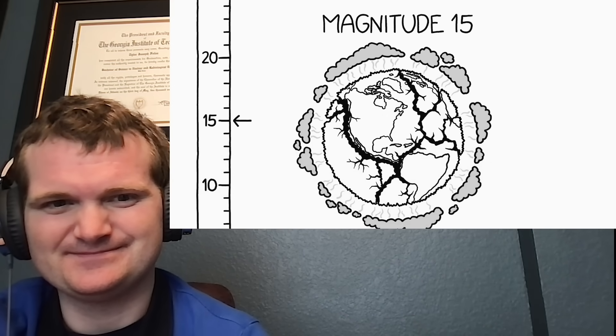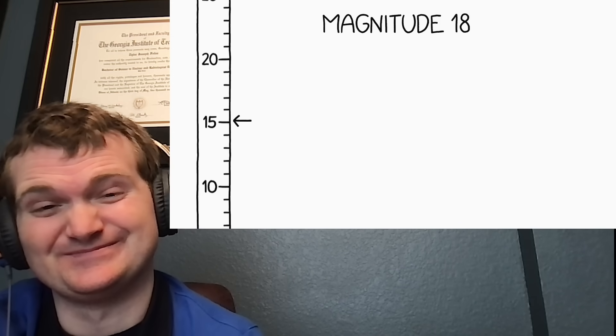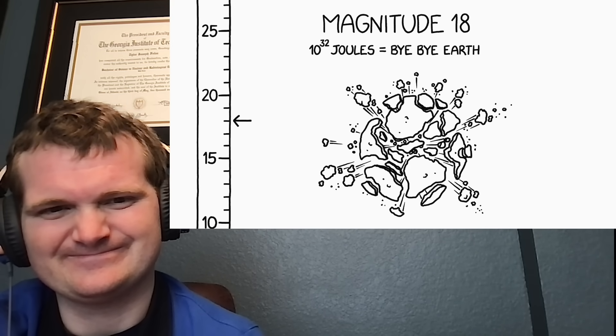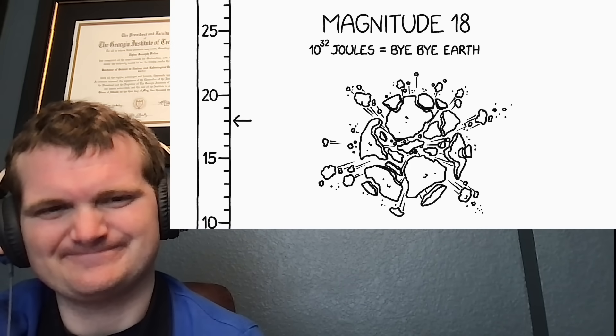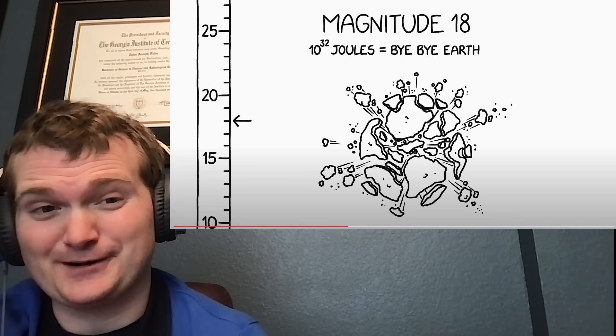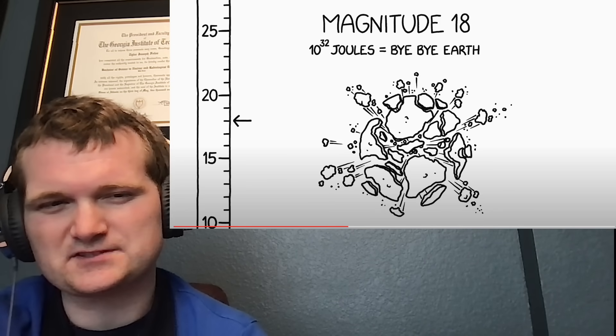Though if that happened, we could rest easy knowing the earthquake couldn't cause any tsunamis. Going a few steps further, a magnitude 18 earthquake would release nearly 10 to the 32 joules of energy, which is roughly the gravitational binding energy of the Earth. Yep, which is why I knew 25 was going to be way in excess and apparently that's greater than the gravitational binding energy of the Sun.